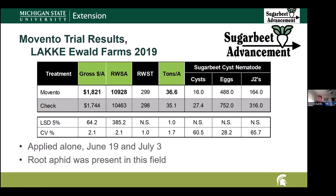The first trial was with Lake Ewald Farms back in 2019. The product was applied alone on June 19th and July 3rd, and we actually saw a significant increase in tons, RWSA, and gross revenue for that treated group. However, it's important to note that root aphid was present in the field and it was a root aphid susceptible variety. So we think that a lot of the economic impact we saw was partially due to controlling root aphid. But if you look at the results from our nematode sampling, we did see a numeric reduction in juveniles, eggs, and in cysts — not statistically significant, but maybe it was helping with the nematodes as well.